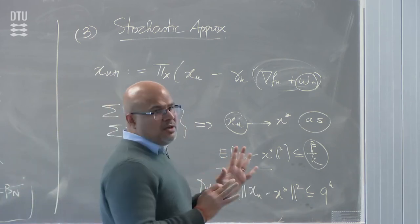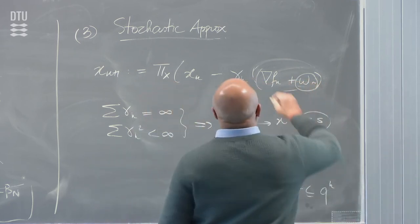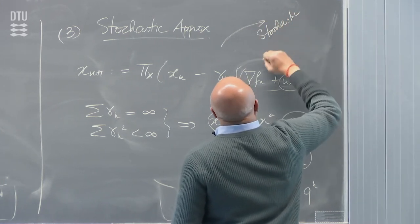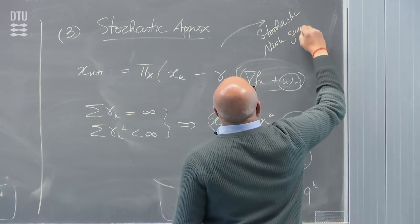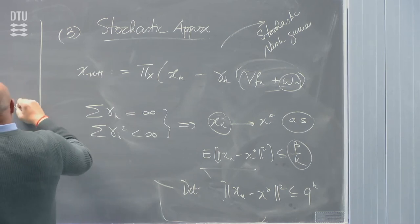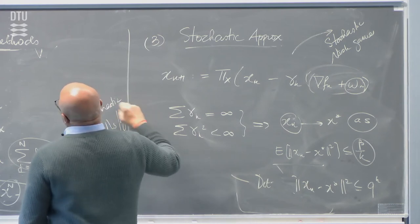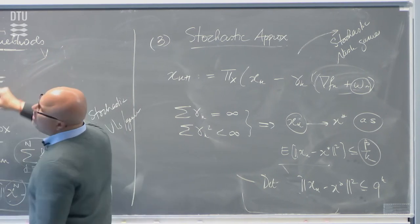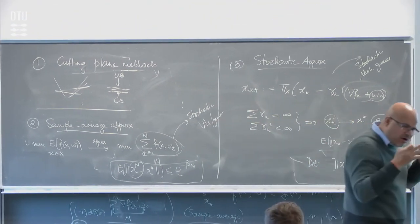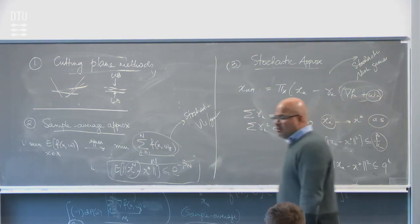These are three approaches generally employed for solving stochastic optimization problems. Stochastic approximation is easily adapted to stochastic Nash games — work has been done on solving these. It's also easily adapted to solving stochastic VIs. Cutting plane methods are less applicable because they require posing the problem as a convex optimization problem, which is not always the case for VIs.